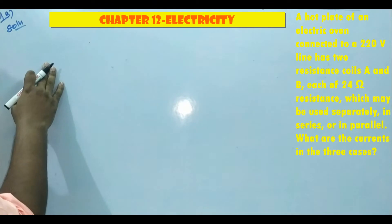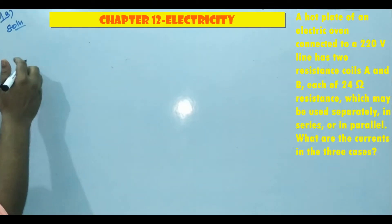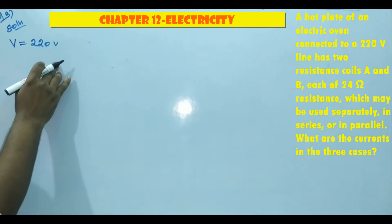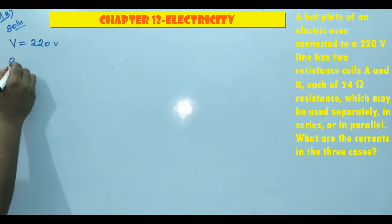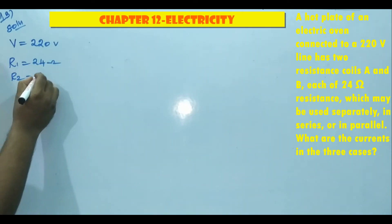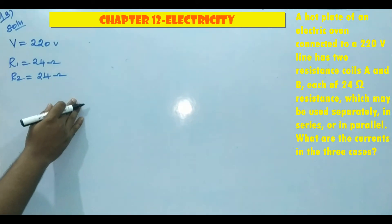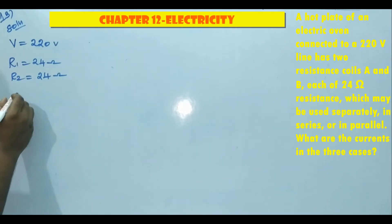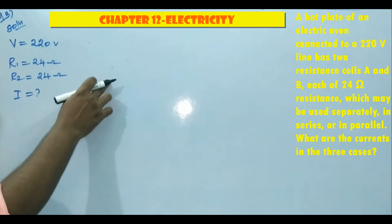A hot plate of an electric oven connected to the 220 volt line, so voltage is 220V. It has two resistance coils A and B, each of 24 ohm resistance. So R1 is 24 ohm and R2 is also 24 ohm, which may be used separately, in series, or in parallel. What are the currents in the three cases? They are asking for current in the three cases: separate, series, and parallel.